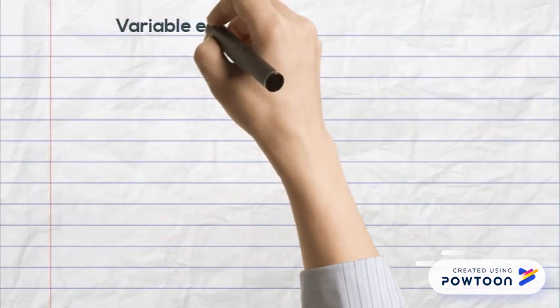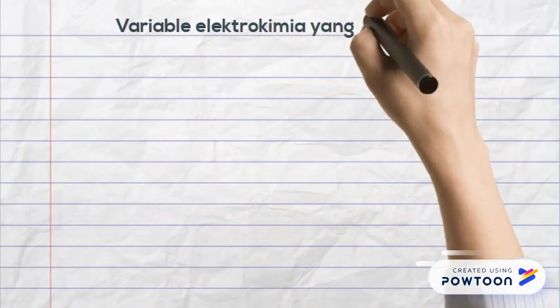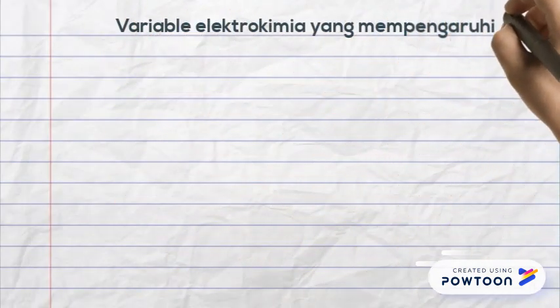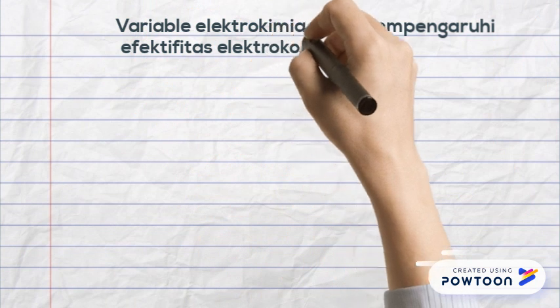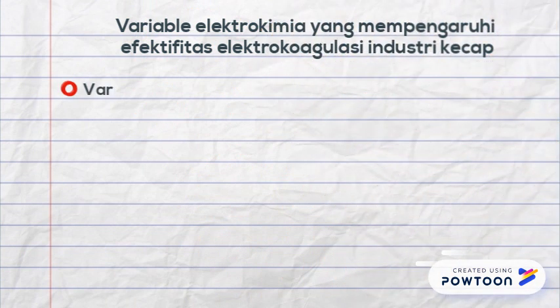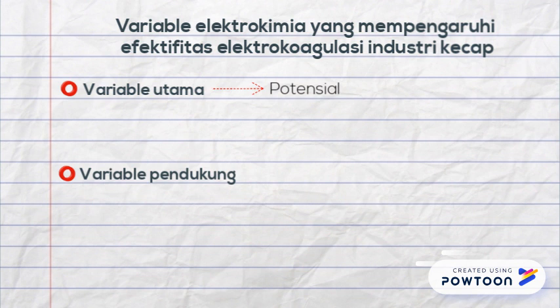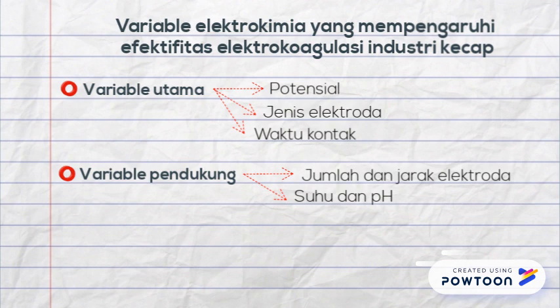Variabel yang dapat mempengaruhi efektivitas elektrokoagulasi pada industri kecap ada dua, yaitu utama dan pendukung. Pada variabel utama terdapat potensial, jenis elektroda, dan waktu kontak. Dan pada variabel pendukung terdapat jumlah dan jarak, suhu, dan juga pH.